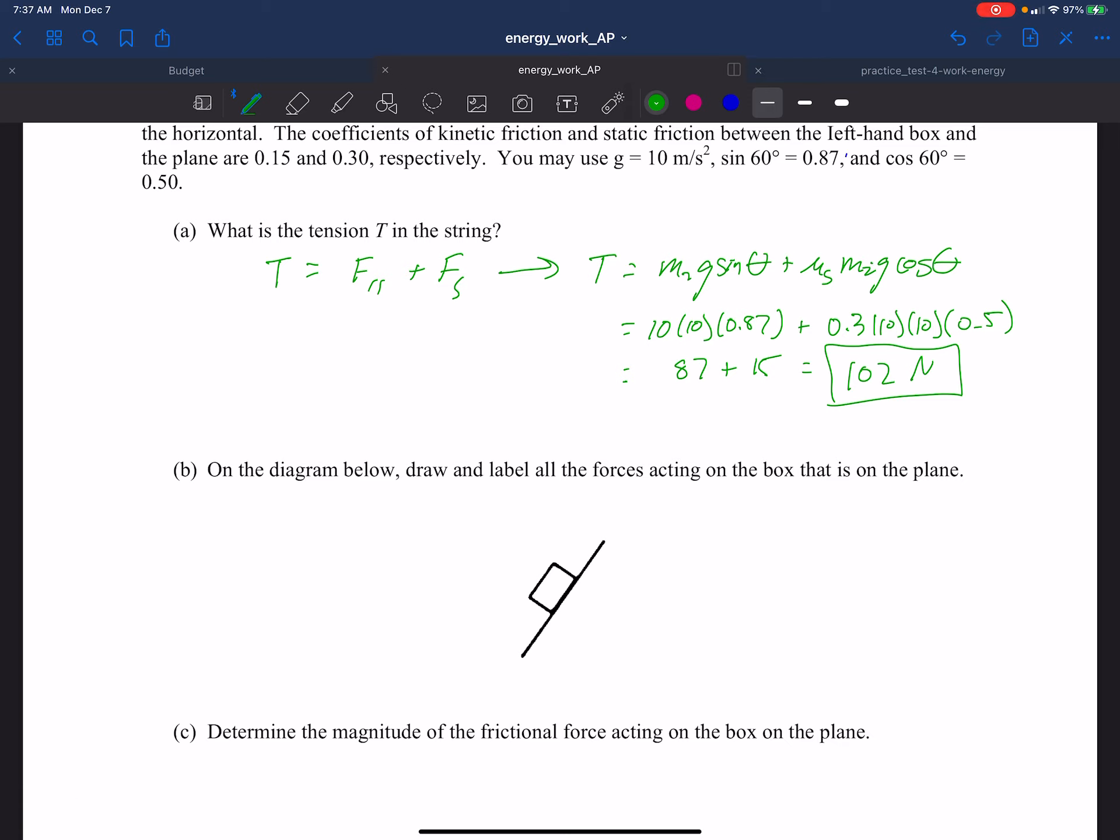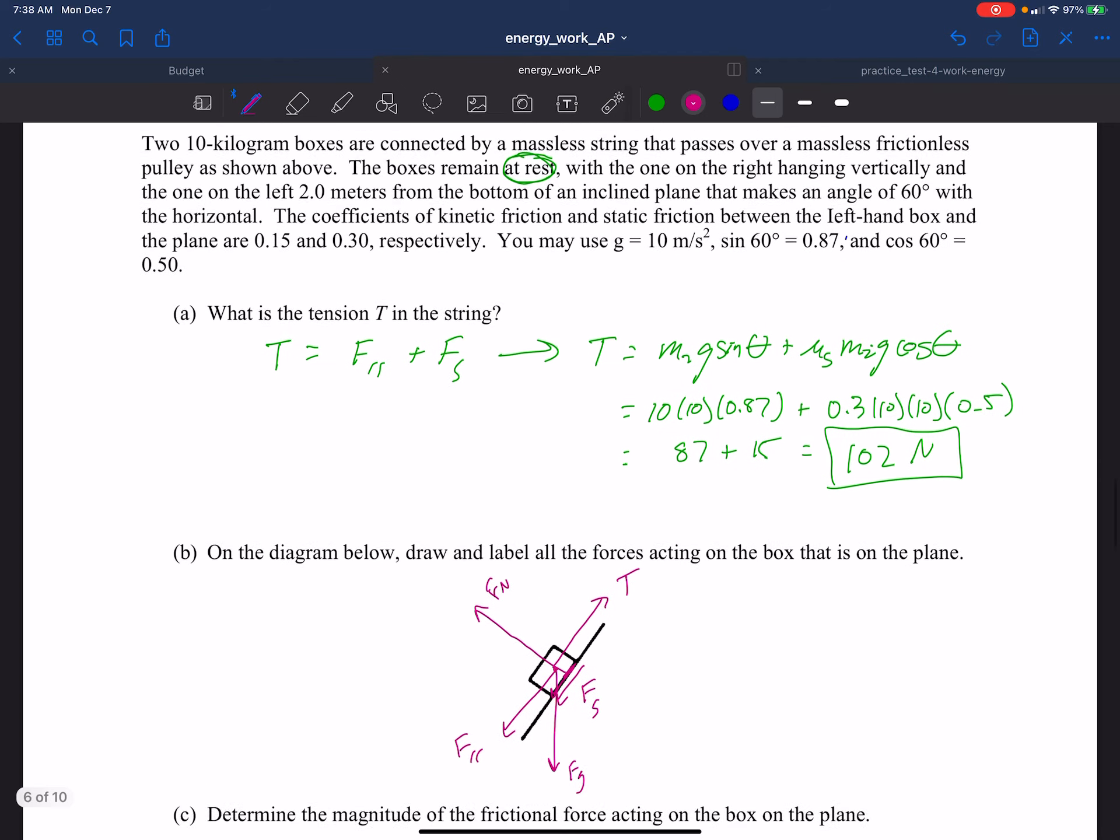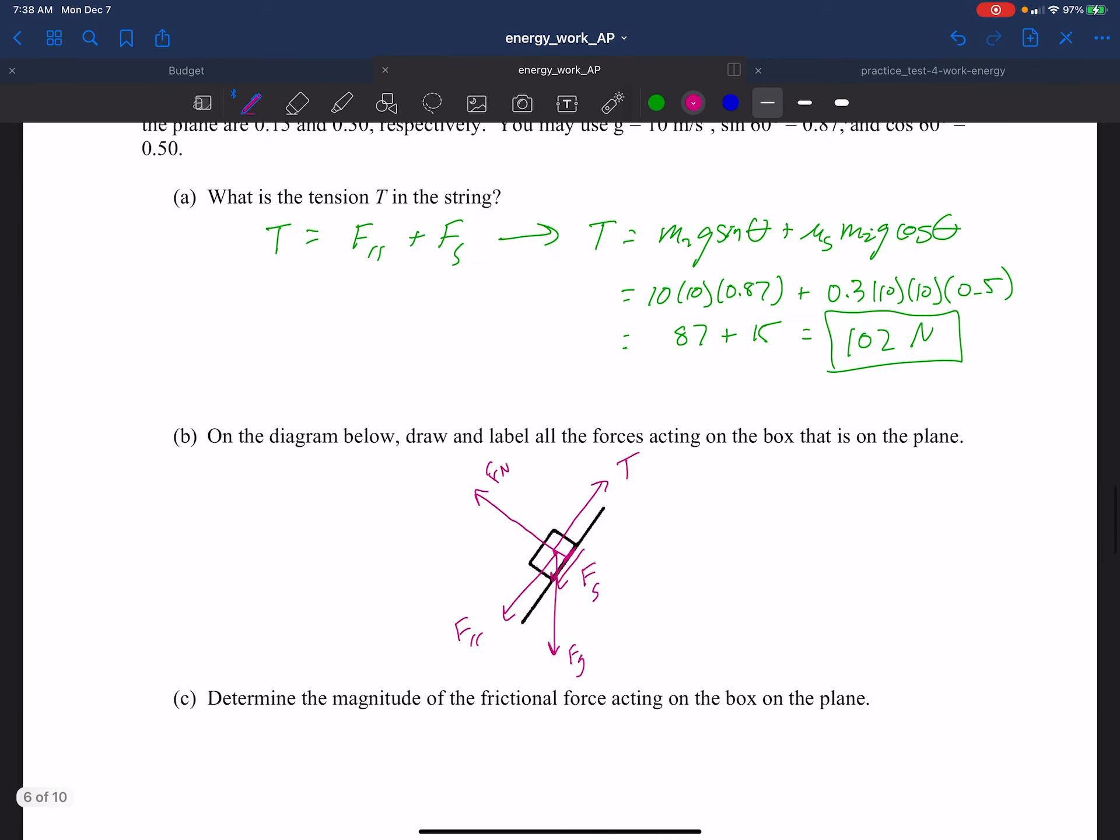On diagram below, label and draw all the forces acting on the box. Okay. So let's go pink. So let's start with F sub G. Now we're going to have the normal force, F sub N. We have the downward force down the ramp. This is going to be the F parallel. We have the tension pulling this back up and we have the force of static friction going down like that. And that's on the surface right here. So those are all the forces that are acting on the plane.